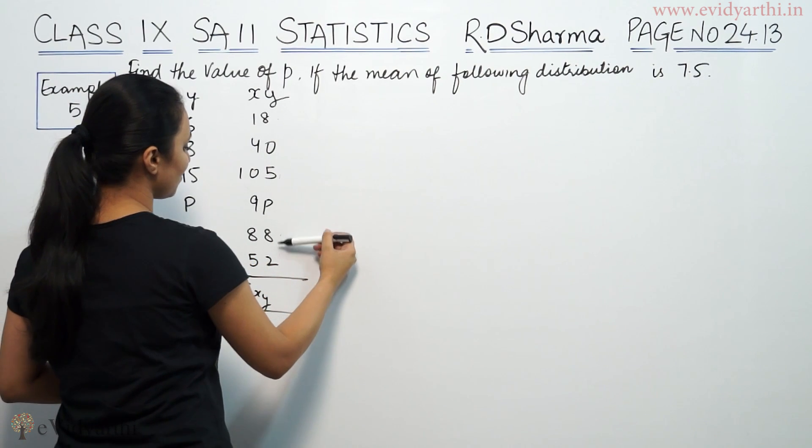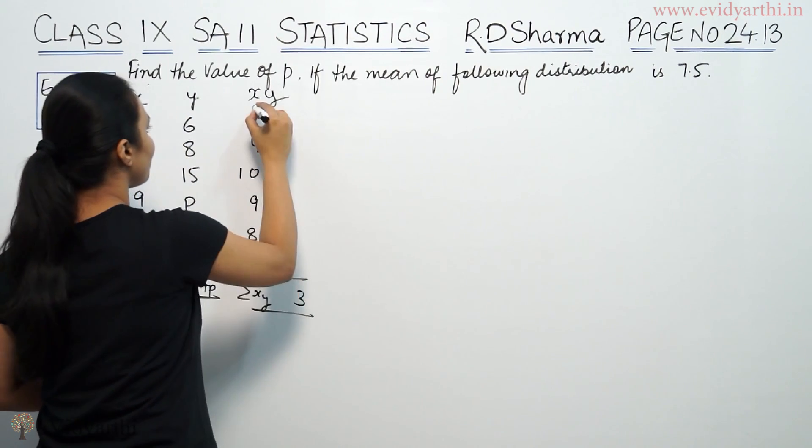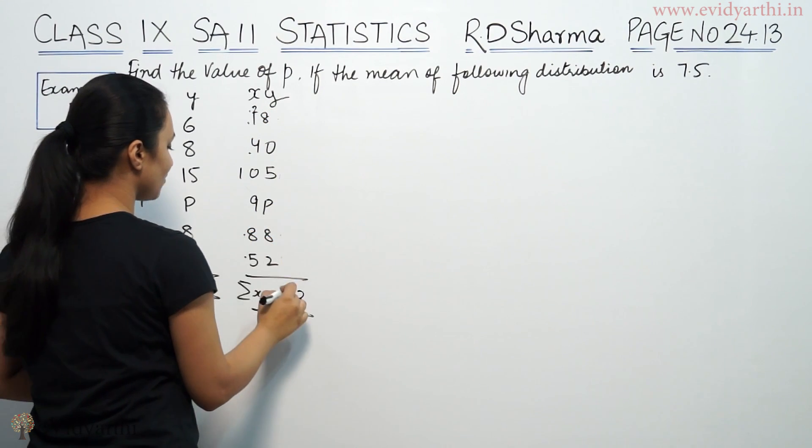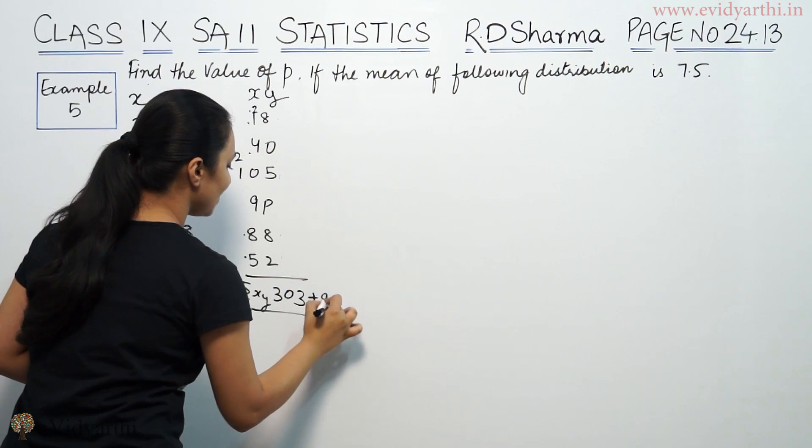Similarly, 18 plus 40 gives 58, 58 plus 105 is 163, plus 9P, then 163 plus 88 is 251, 251 plus 52 is 303 plus 9P.